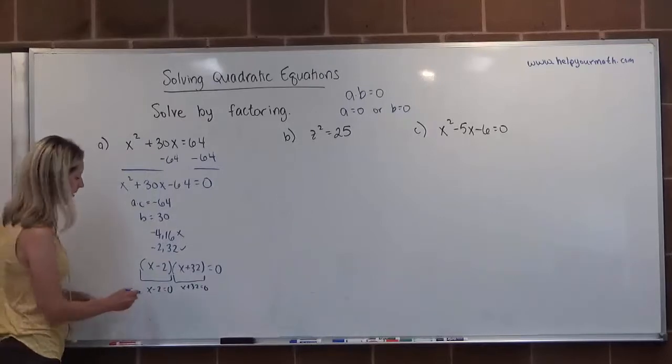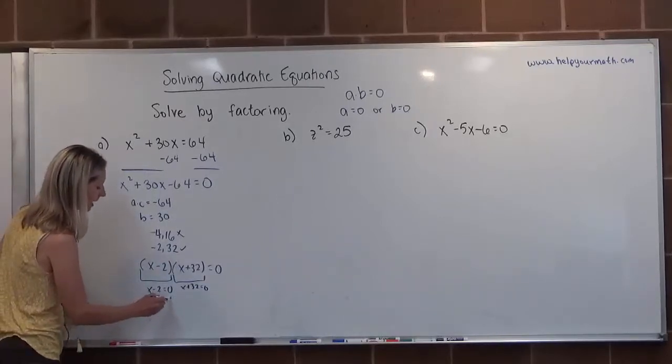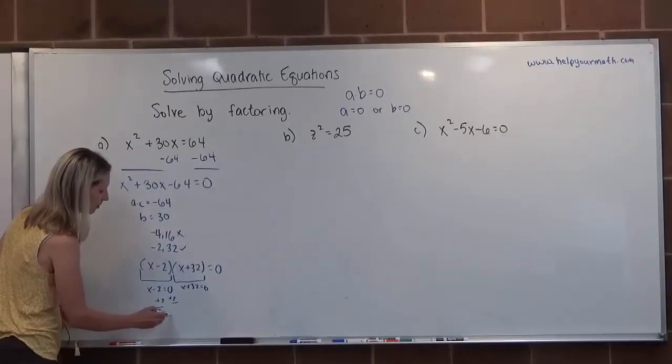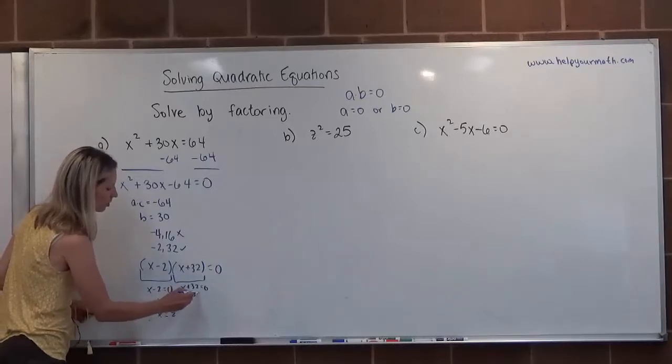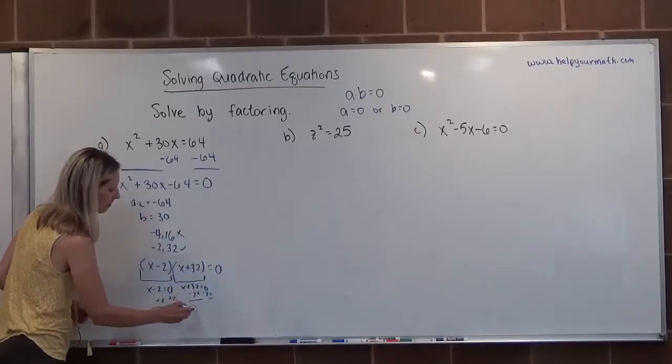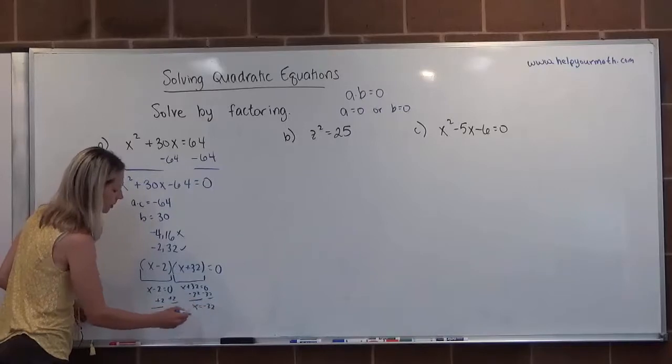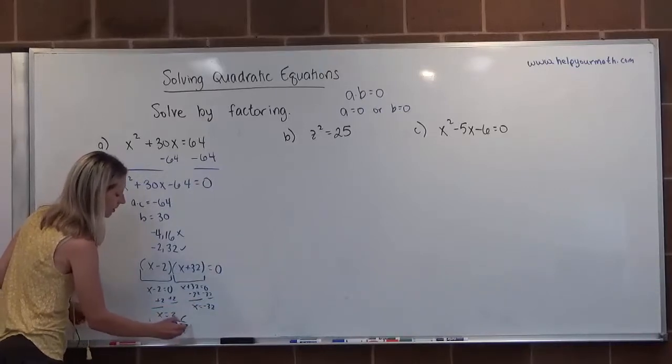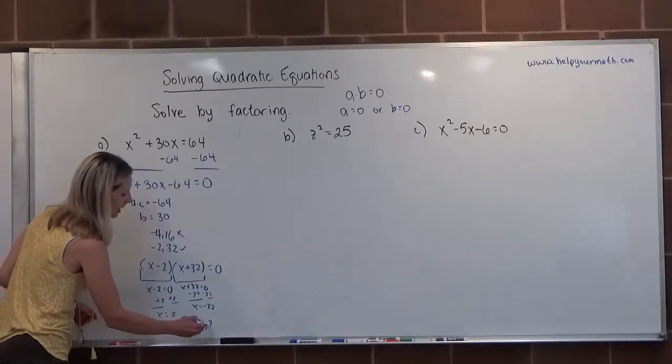So either that means that x minus 2 is equal to zero, or x plus 32 is equal to zero. Now we're going to solve each one separately. So this would be plus 2 on both sides, and we get x equals 2. Here we subtract 32 from both sides, and we get x equals negative 32. So we have two solutions, negative 32 and positive 2.